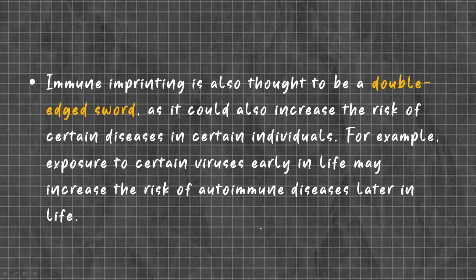Immune imprinting is also thought to be a double-edged sword, as it could also increase the risk of certain diseases in certain individuals. For example, exposure to certain viruses early in life may increase the risk of autoimmune diseases later in life.